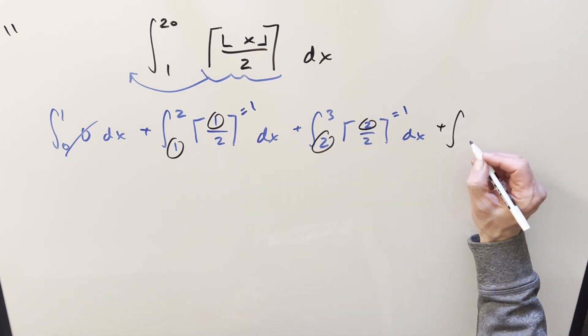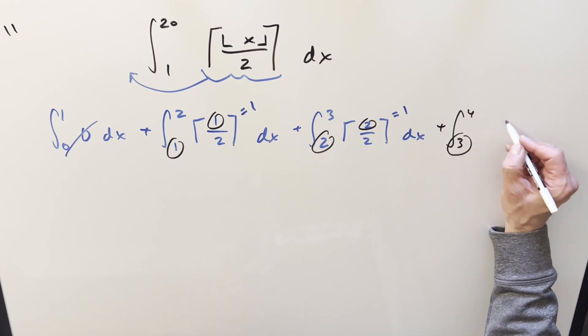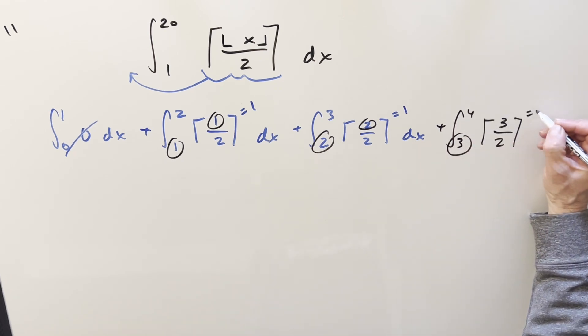So if I do just one more of these from 3 to 4, we get the 3. And so the ceiling is going to round this up to 2.